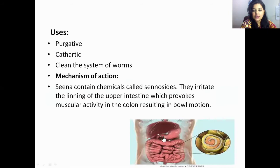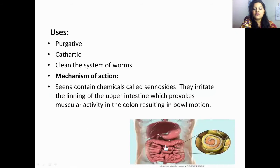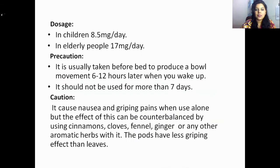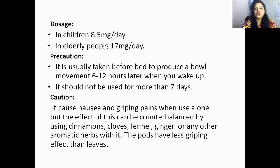When sennosides irritate the upper intestine, they provoke contraction or muscular activity in the colon. Due to this irritation in the large intestine, it results in bowel motion. So Senna is used as a purgative, cathartic, and to clean the system of worms.